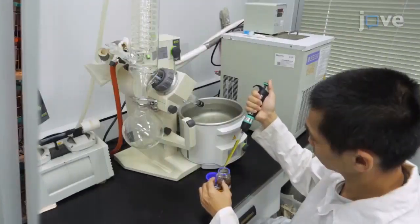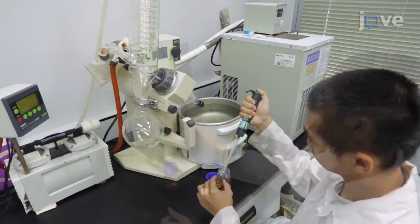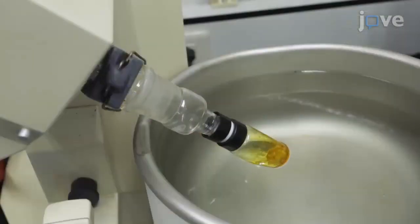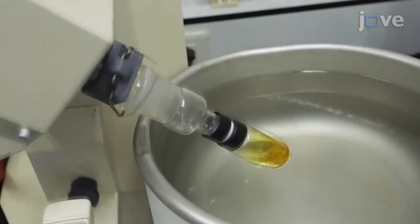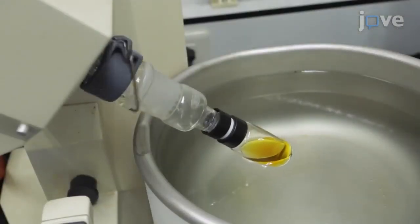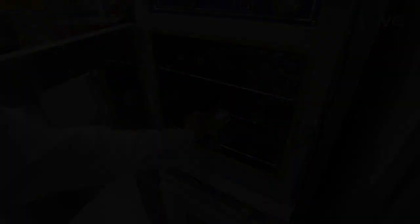When ready to prepare the extracts for HPLC, use vacuum evaporation to concentrate 10 milliliters of each extract at 40 degrees Celsius for 10 minutes. Bake the dry matter at 45 degrees.